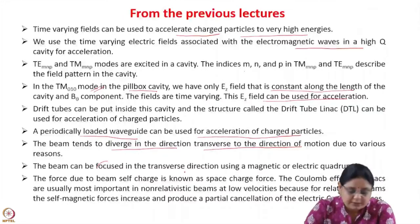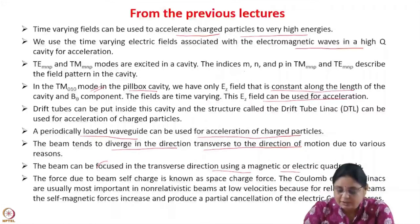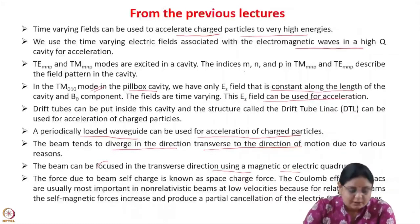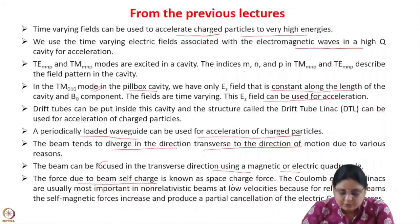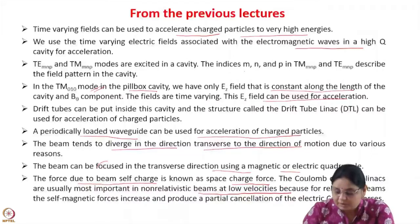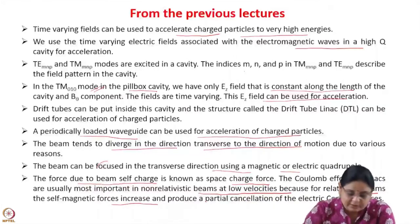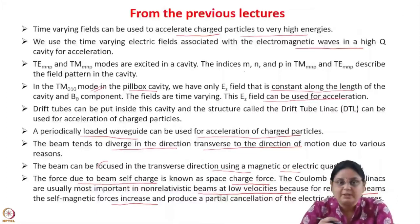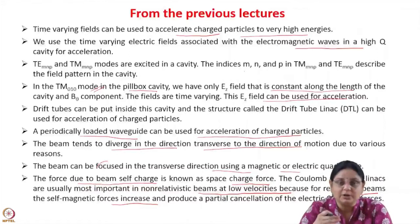The beam can be focused in the transverse direction using magnetic or electric quadrupoles. We also saw that we can use solenoids for focusing. The force due to the beam self-charge is known as space charge forces. The Coulomb effects in linacs are usually most important in non-relativistic beams at low velocities, because for relativistic beams the self-magnetic forces increase and produce partial cancellation of the electric Coulomb forces. Having studied all this, now let us examine the behavior of the beam in the longitudinal direction.